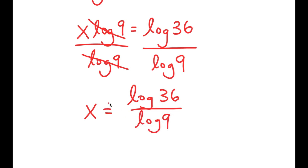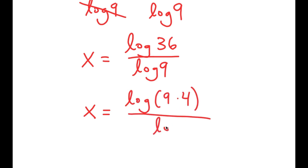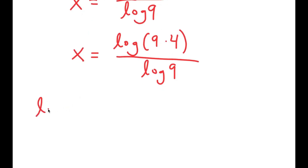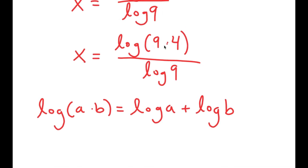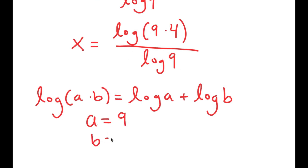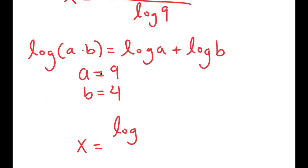We aren't done yet because we want to find the exact value of x with no logarithms in our solution. So I'm going to rewrite log 36 as log of 9 times 4 to simplify it. I can then use the property that states log of a times b is equal to log a plus log b. So log of 9 times 4 becomes log 9 plus log 4.